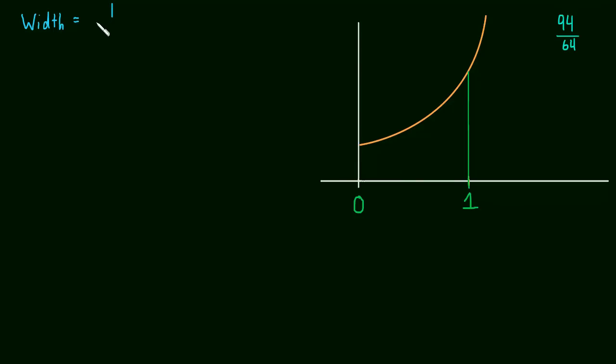So the width is just going to be, we have a total length, the interval, the total length is 1, and we have n, we're splitting that up between n number of rectangles. So the width is 1 over n.